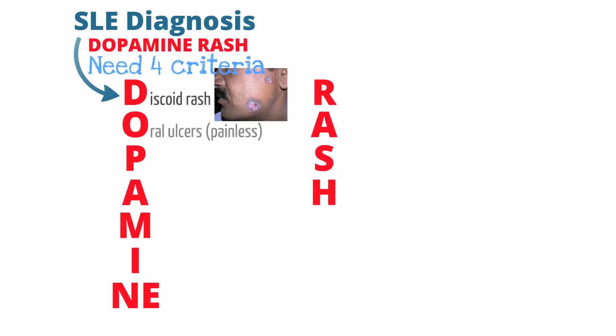Next we have oral ulcers. Generally patients will have ulcers that you find incidentally on exam. The way to differentiate these ulcers from infectious ulcers is that infectious ulcers are usually painful, while ulcers from lupus are generally painless. Other skin findings include a photosensitive rash — photosensitive means that sun exposure triggers and can worsen the skin rash. Patients may also experience joint pain, otherwise known as arthralgia, or joint inflammation, known as arthritis.